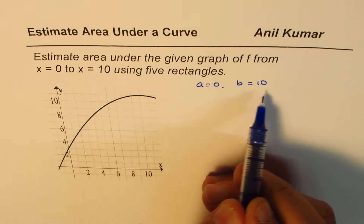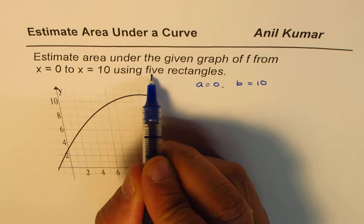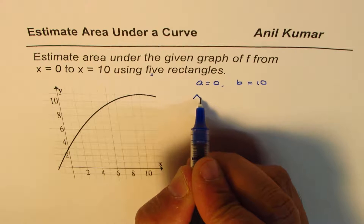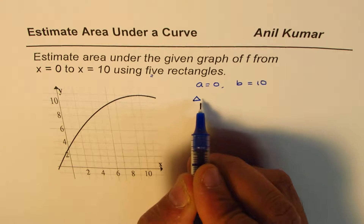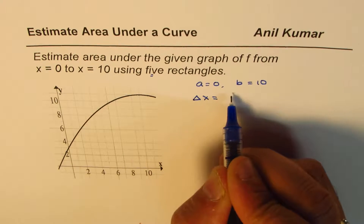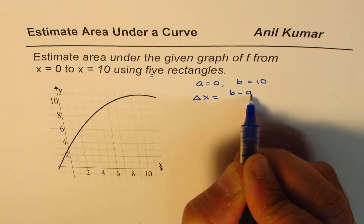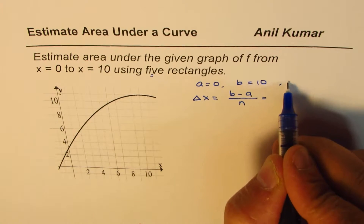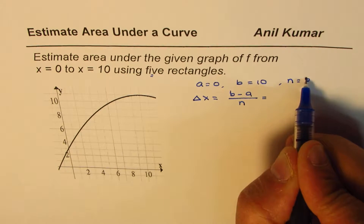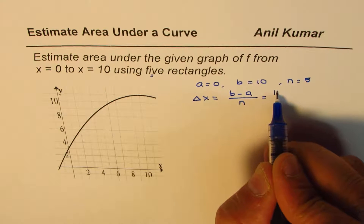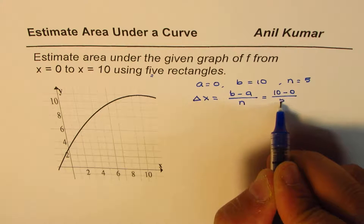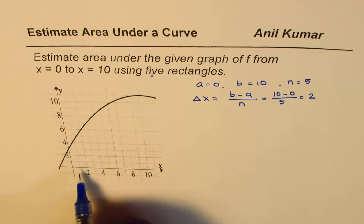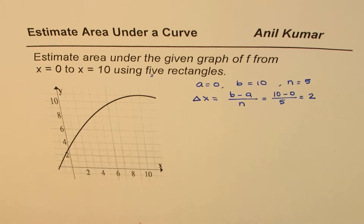If we divide this space into 5 equal rectangles, we need to find how wide each one is. Delta x equals b minus a divided by the number of rectangles. In this case, that's 10 minus 0 divided by 5, which equals 2. So each rectangle will have a width of 2.